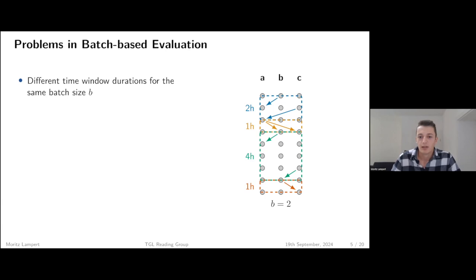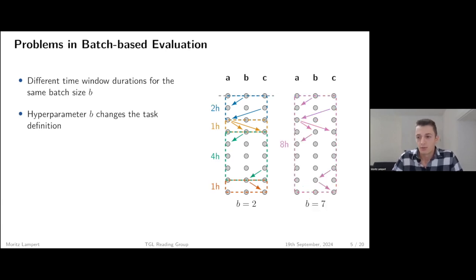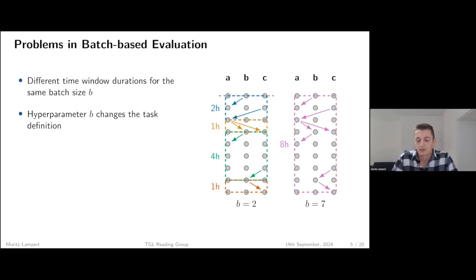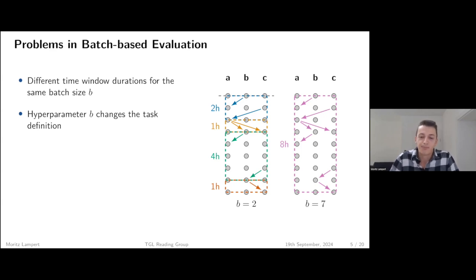This also happens when using different batch sizes, since batch size is normally a hyperparameter that you tune and can choose specifically for each model. Choosing a very large batch size could make the task trivial — for example, a batch size of seven in this example would have each edge occurring at least once, so you could just say every edge occurs and forecast every edge at every time, which is not how it's supposed to be.